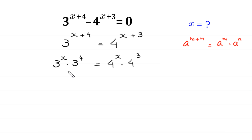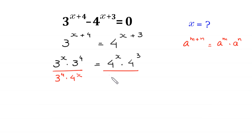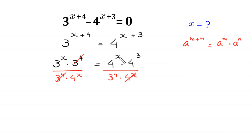Now we divide both sides of this equation by 3 to the power 4 times 4 to the power x. This 3 to the power 4 cancels out with 3 to the power 4, and this 4 to the power x cancels out with 4 to the power x.